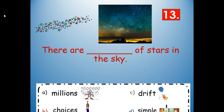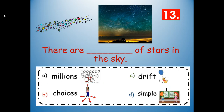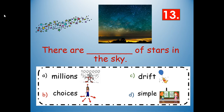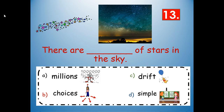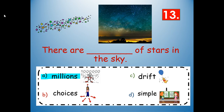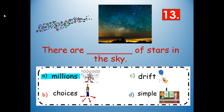Number 13: there are blank of stars in the sky. Would it be millions, choices, drift, or simple? There are millions of stars in the sky. Millions — M-I-L-L-I-O-N-S.